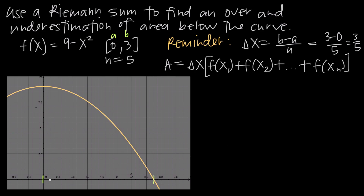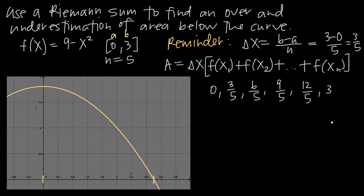The left edge of the interval is at x equals 0. We add delta x repeatedly until we reach x equals 3. So 0 plus 3 over 5 gives 3 over 5, then 6 over 5, then 9 over 5, then 12 over 5, and then 15 over 5, which is 3. We've reached the right edge of the interval. So these are the divisions of our subintervals.